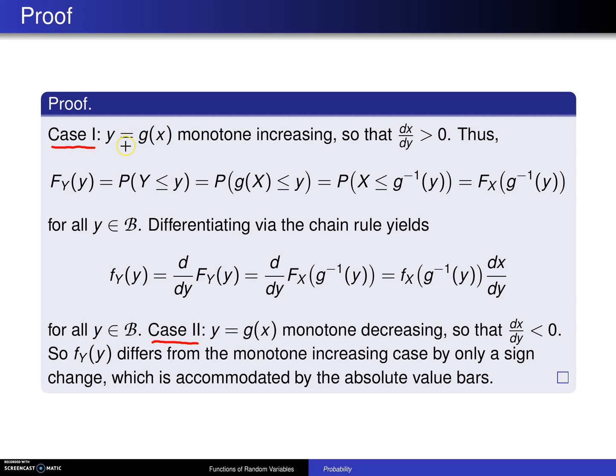In case 1, we assume that Y = g(X) is a monotone increasing function, and that means that dx/dy will be greater than 0. Case 2 will be Y = g(X) is monotone decreasing, and in that case dx/dy will be less than 0.